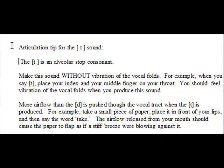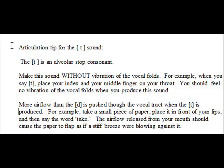Articulation tip for the T sound. The T is an alveolar stop consonant. Make this sound without vibration of the vocal folds. For example, when you say t, place your index and your middle finger on your throat — you should feel no vibration of the vocal folds when you produce this sound. More airflow than the D is pushed through the vocal tract when the T is produced. For example, take a small piece of paper, place it in front of your lips, and then say the word 'take.' The airflow released from your mouth should cause the paper to flap as if a stiff breeze were blowing against it.